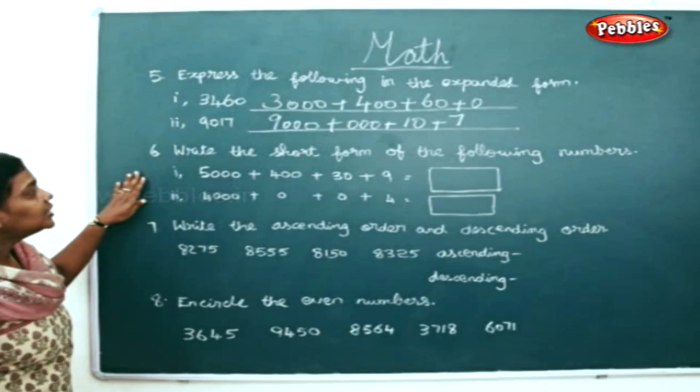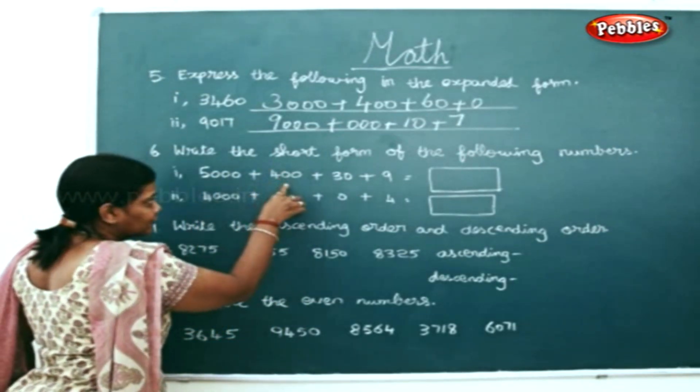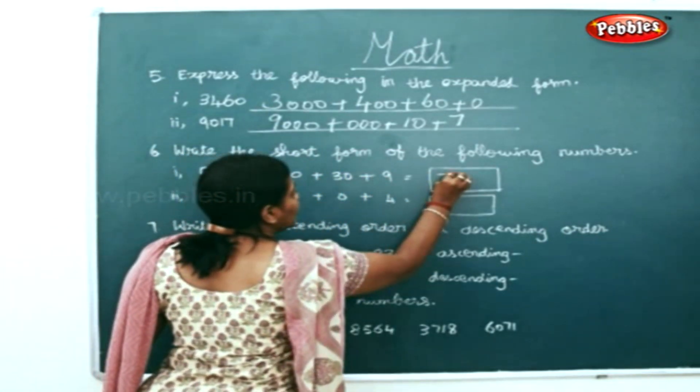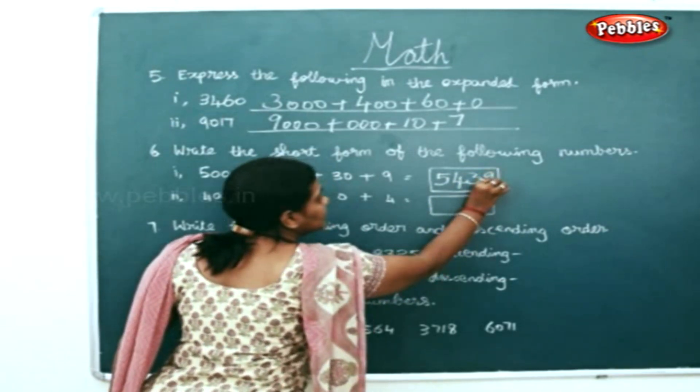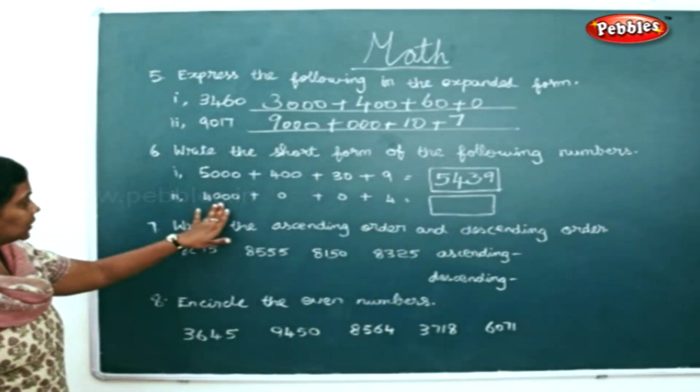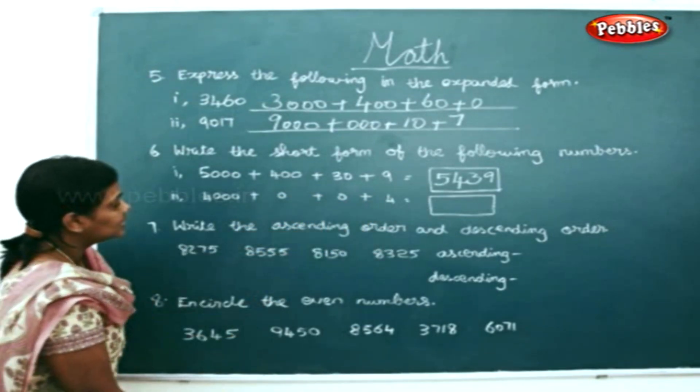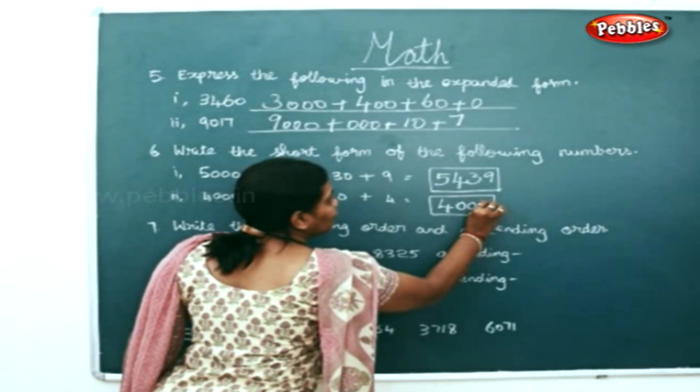Now write the short form of the following numbers. 5000 plus 400 plus 30 plus 9 can be written as 5439. 4000 plus 0 plus 0 plus 4 can be written as 4004.